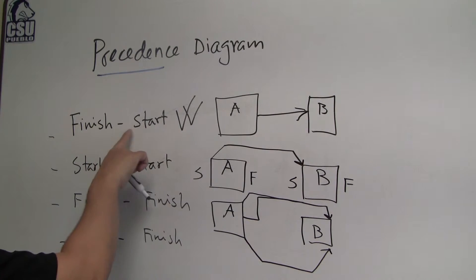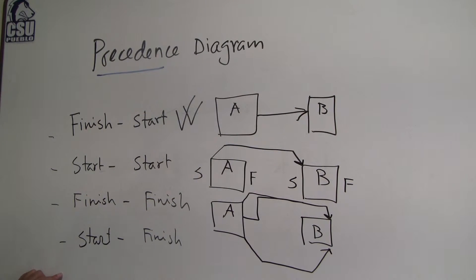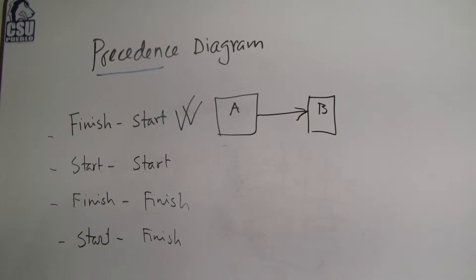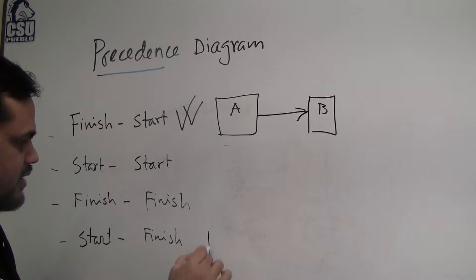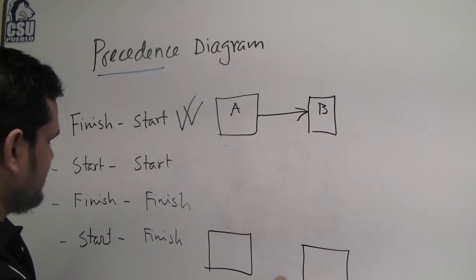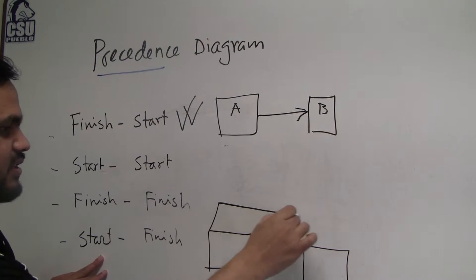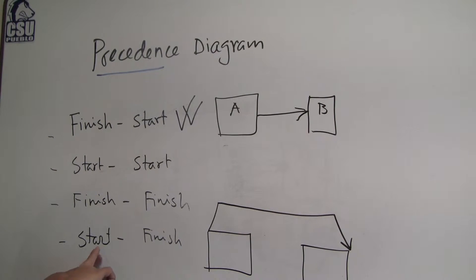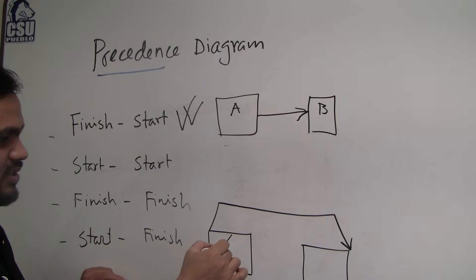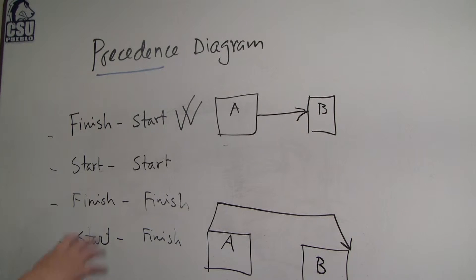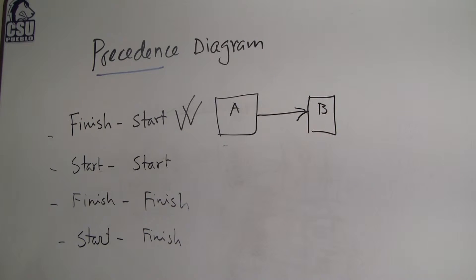Finish-to-start is the most common — once A finishes, B can start. Now, start-to-finish is not so common; we do not really use it. It means once this activity starts, the other can finish. So if A starts, B can finish. It is uncommon, but the precedence diagram can accommodate it.